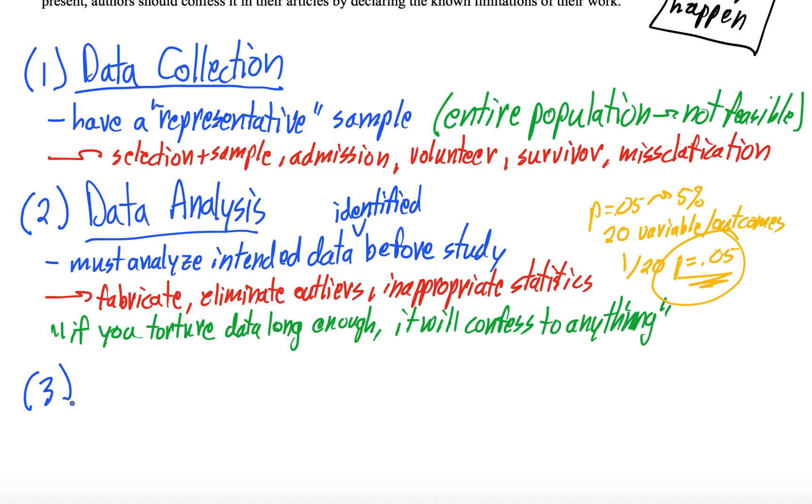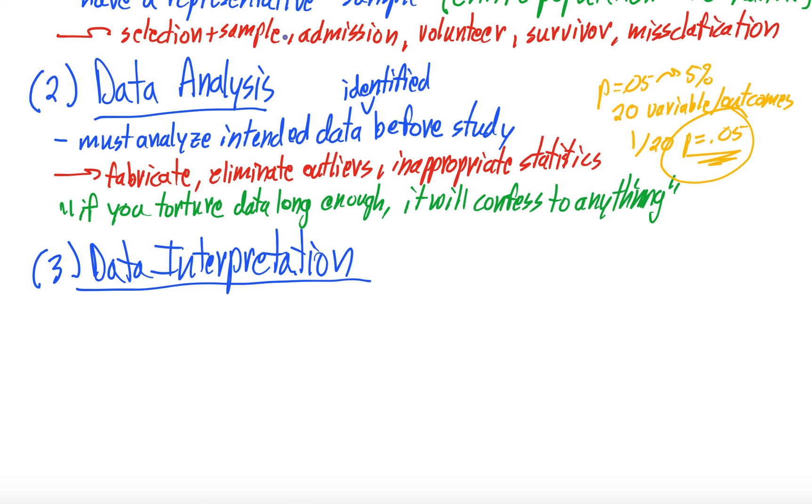Then a few quicker ones, we're getting towards the end here. Data interpretation. So we analyzed our data, now we interpret it. When we're interpreting data, something that we're going to do another video on, is whether it is clinically meaningful. And this essentially means, is the result something that makes a clinical difference? If I'm saying their white count is one point higher, one point lower, does that really affect clinical outcomes? Maybe, probably not though. Also, mistaking causality for correlation. So saying that one thing caused another thing, even though it was just correlated, and the study wasn't set up to find causality. Extrapolating data. So our study population is all females above the age of 90, then extrapolating that result to apply to 50-year-old males.